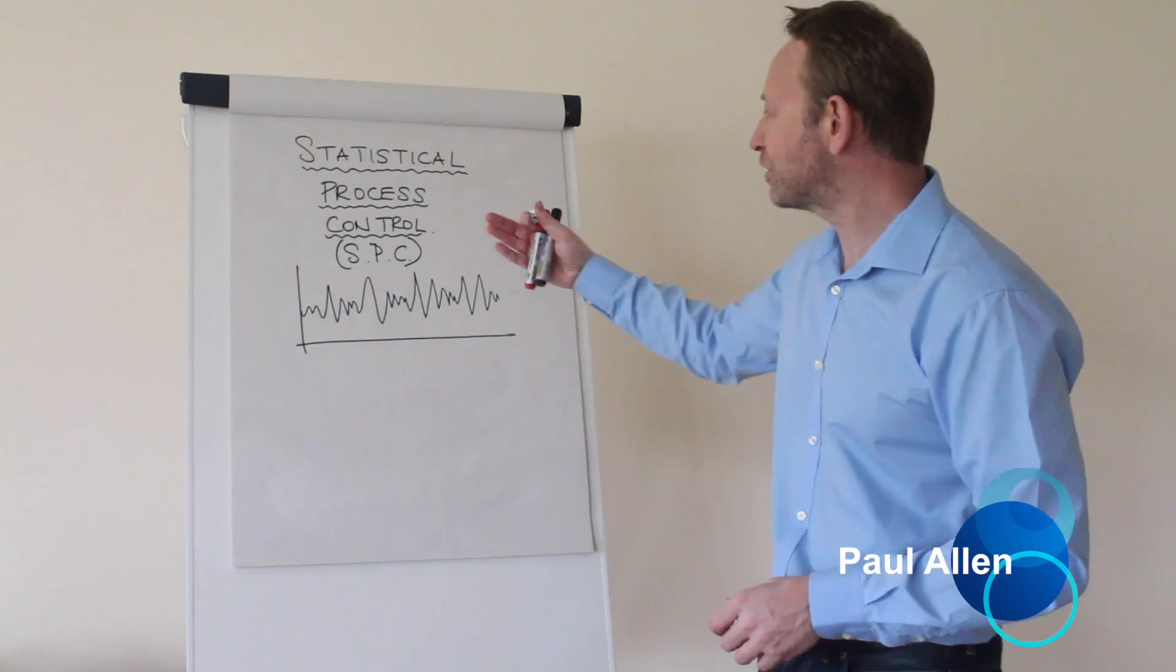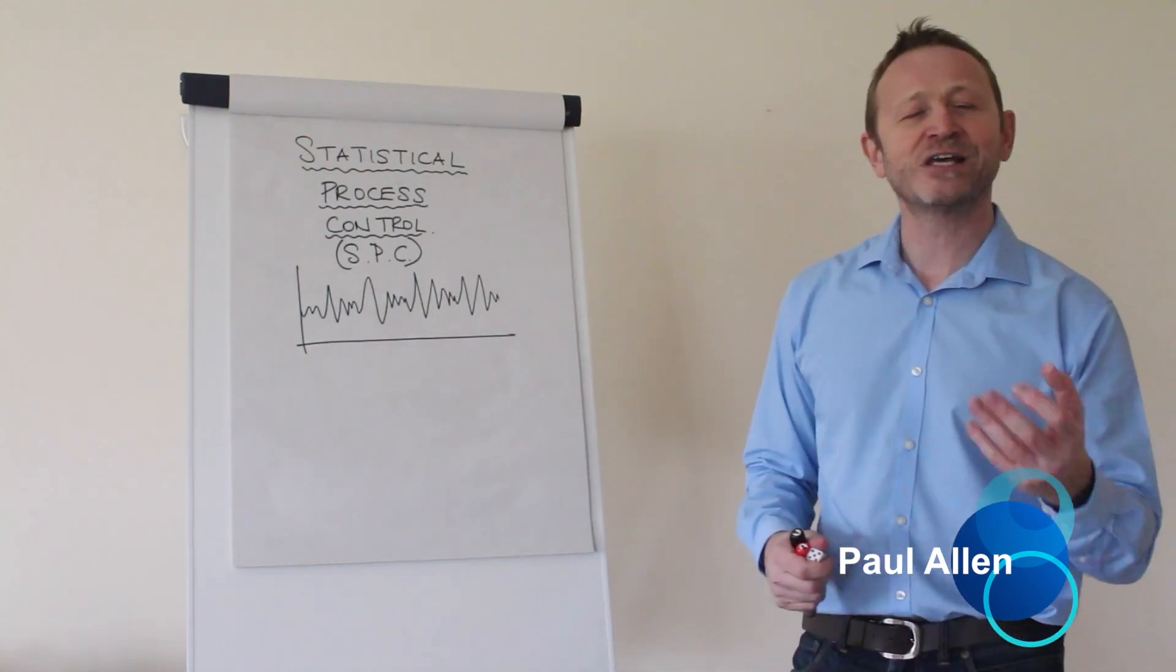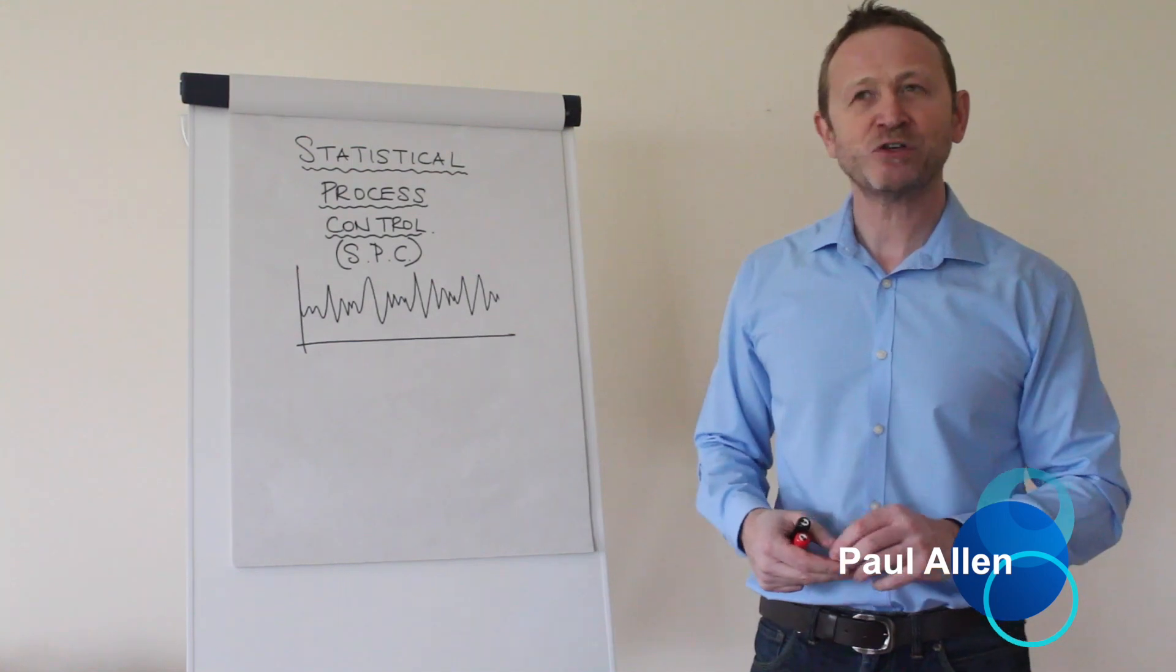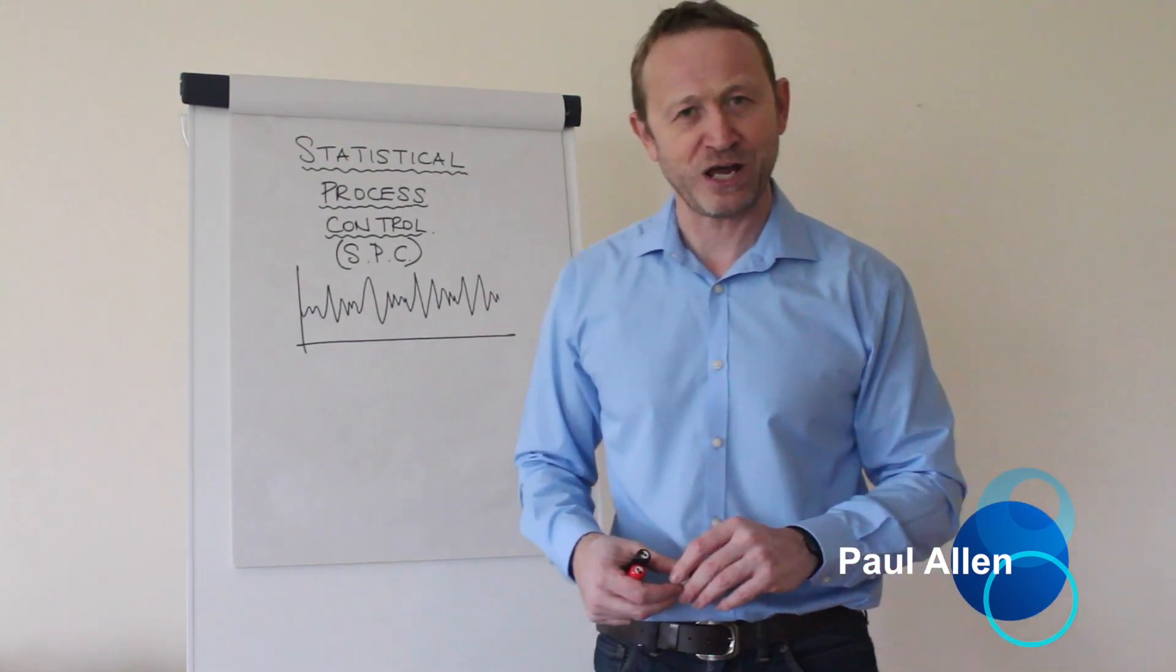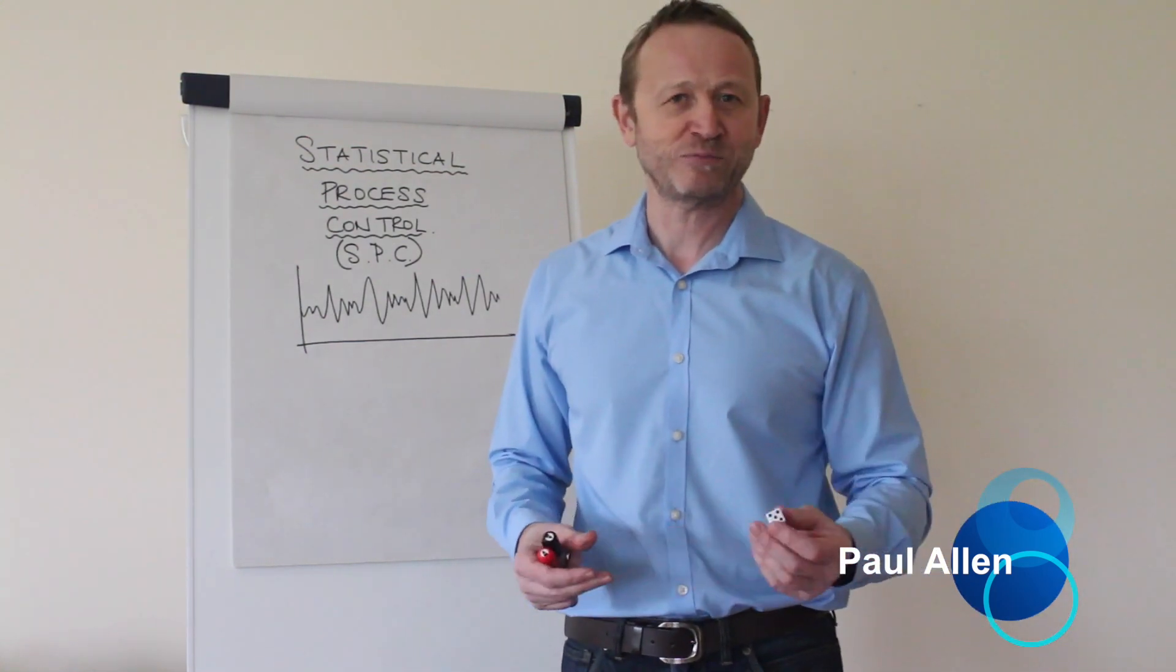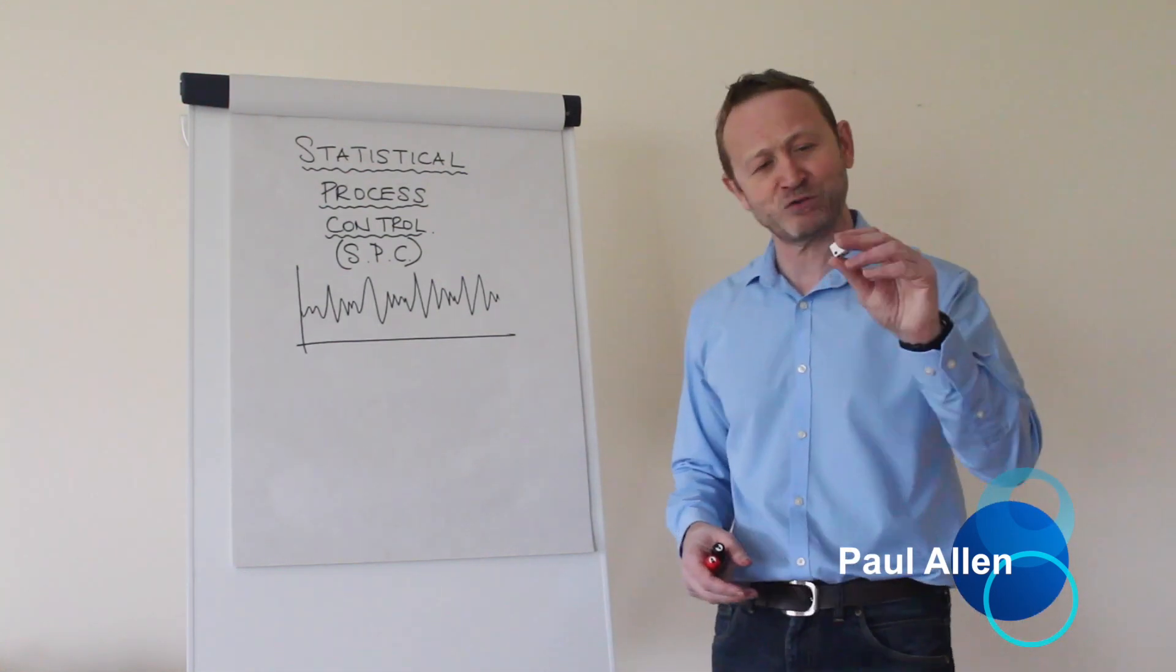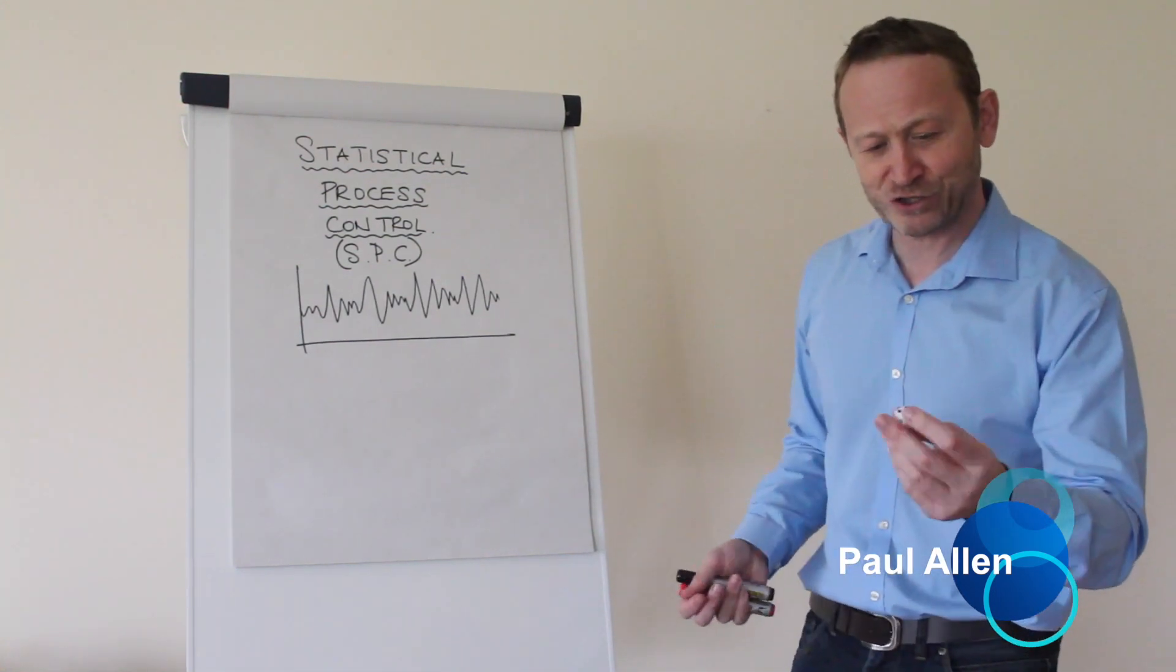Because that's a great way to look at statistical process control. It's telling you about the health of your process. So let's have a look at a random number generator that we understand, and let's have a look at how SPC would operate with it. It's the six-sided dice.